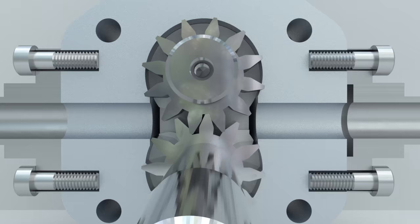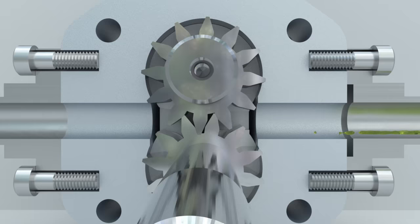As the gears rotate, the fluid flows along the perimeter to the discharge area, where the gear teeth go into the mesh once again.